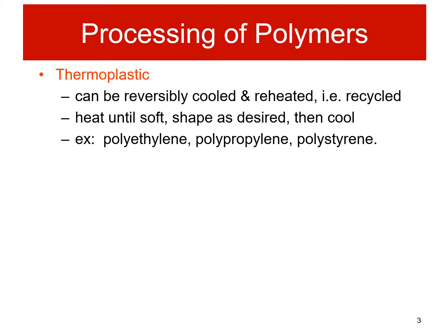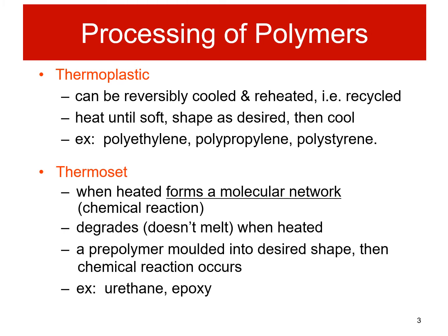As we know, thermoplastics can be reversibly cooled and reheated, therefore they can be recycled. They will heat until soft and we can shape them as desired and cool them. Examples include polyethylene, polypropylene, and polystyrene. For thermoset materials, when heated they form a molecular network through chemical reaction and degrade — they don't melt when heated. A pre-polymer is molded into the desired shape and then chemical reaction occurs. Examples are urethane and epoxy.